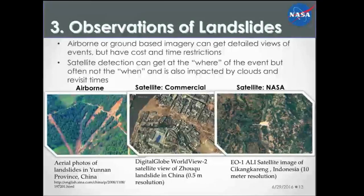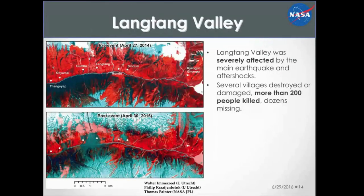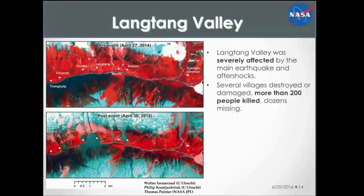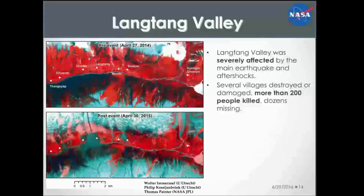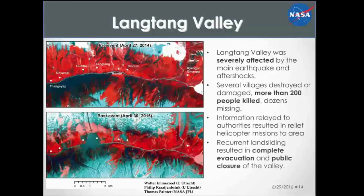When looking at optical sensors like Landsat or EO-1, it can be challenging because of sensor resolution and you need to know exactly where to look. Another way to observe these events from space is by looking at the difference in vegetation. This is a landslide triggered in the Langtang Valley following the devastating Gorkha earthquake in April 2015. In the Landsat image, red indicates healthy vegetation, whereas you can clearly see the disturbed vegetation below after the landslide, which killed over 200 people in that town.